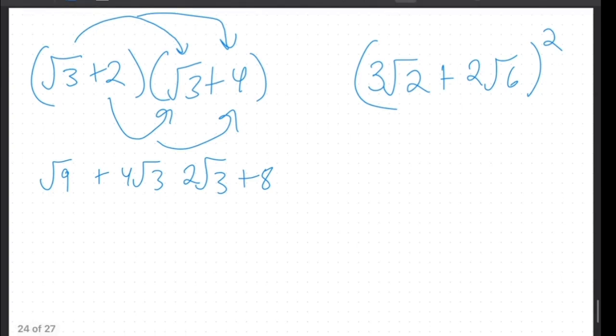Combine like terms and we will get... So square root of 9 is 3. These ones have the same base so we can add them. So it would be plus 6 root 3 plus 8. And then we can combine the 8 to become 11 plus 6 root 3.